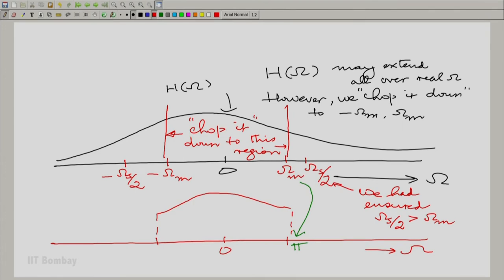And therefore we should in fact broaden our perspective a little. Although this particular signal is band limited to capital omega m, we can admit signals which are band limited to less than capital omega s by 2. So instead of chopping it down to this region, we could actually bring it all the way up to minus omega s by 2 to plus omega s by 2. We can retain that.